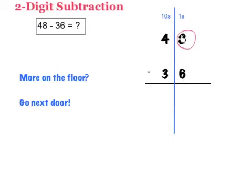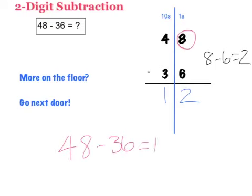Now I can just subtract in the ones place. 8 minus 6 equals 2. Then I continue to subtract my tens place. 4 minus 3 equals 1. So I learned that 48 minus 36 equals 12. And I only need to borrow from the tens place, I only need to go next door if there is more on the floor. In this case, there is more up above.